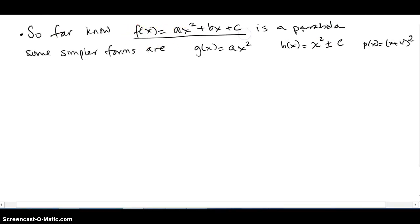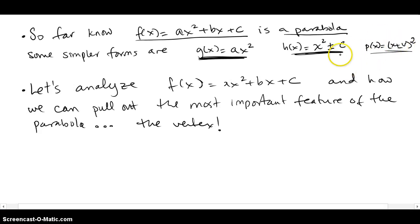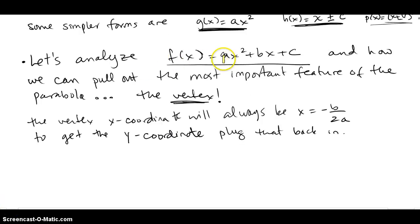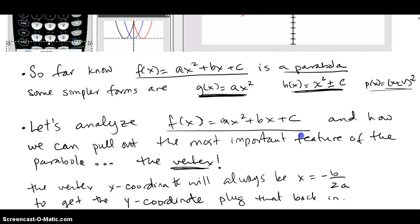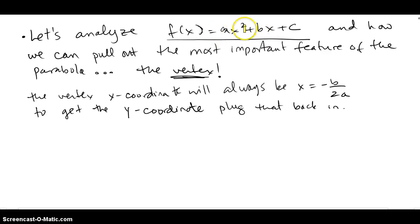So far we know: a quadratic function turns into a parabola; a affects the width and direction; a number added or subtracted outside shifts it up or down; and a number added or subtracted inside the binomial shifts it left or right. We'll revisit these later. For right now, let's analyze the basic quadratic function and how we can pull out the most important feature — the vertex — from the equation. From a graph it's easy to see the vertex, like at (−3, 0), (0, 0), or (3, 0).